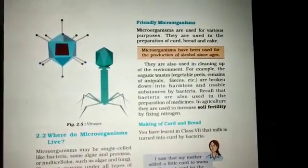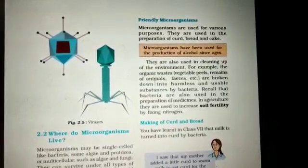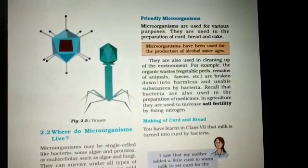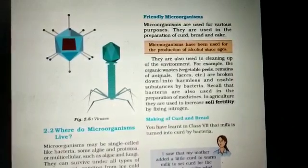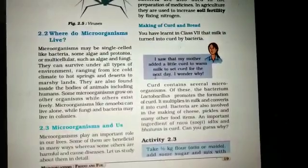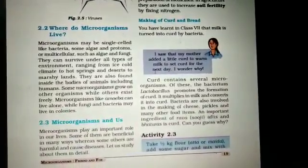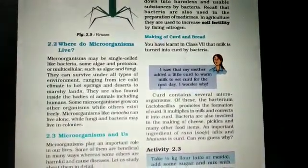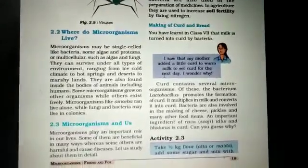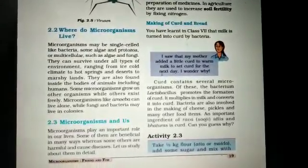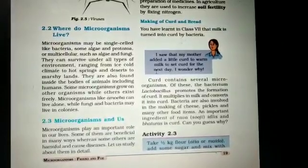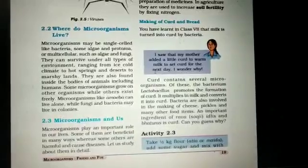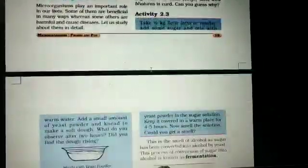First we will study about the friendly type of microorganisms and how they help us in various ways. Some of them are used in the preparation of curd, bread, and cake. Microorganisms have been used for the production of alcohol since ages. These microorganisms are also used in cleaning up the environment — organic waste like vegetable waste, remains of animals, and feces can be broken down into harmless and useful substances by bacteria.